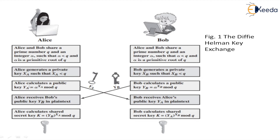Alice calculates her public key y_A as alpha raised to x_A mod q, and this y_A is exchanged with Bob. Bob receives Alice's public key y_A in plaintext. Bob calculates his public key y_B as alpha raised to x_B mod q, and this y_B is exchanged with Alice. Alice receives Bob's public key y_B in plaintext. So y_B becomes a public key for Alice and y_A becomes a public key for Bob.